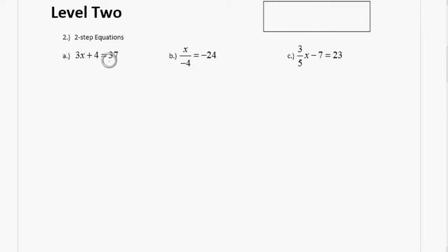If we have 3x plus 4 equals 37, we've got x's and numbers over here, just numbers over here. What's out of place? If we want to get x by itself, what's out of place? You want to add 4?